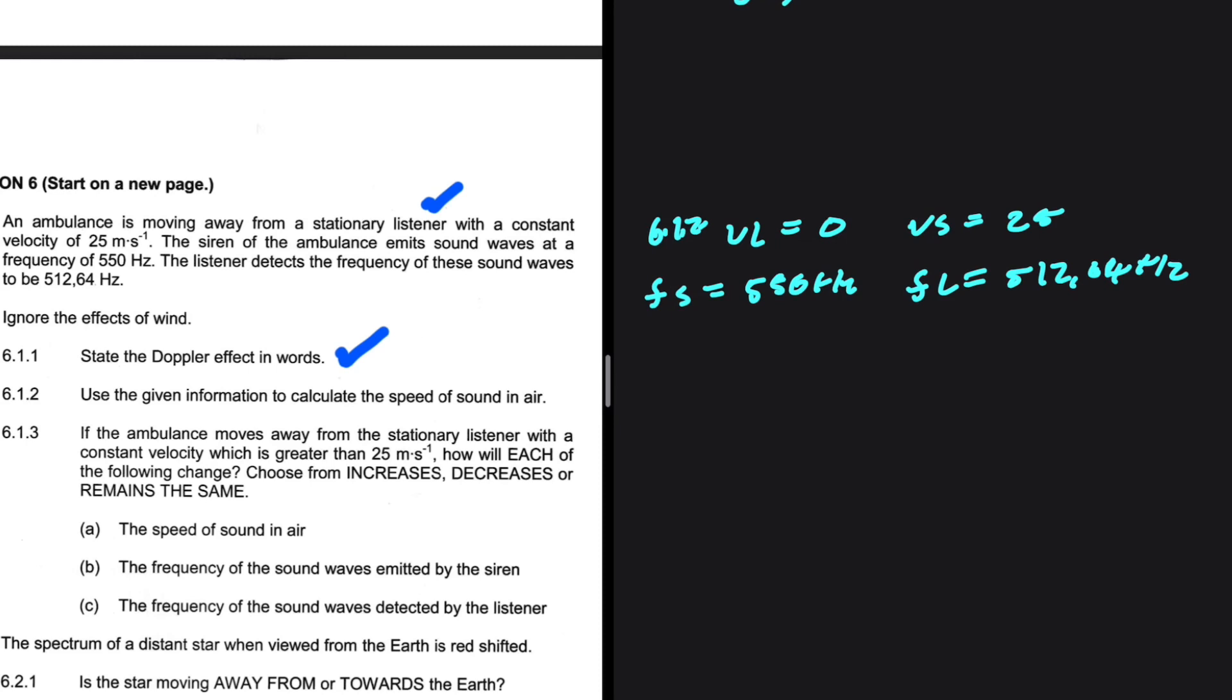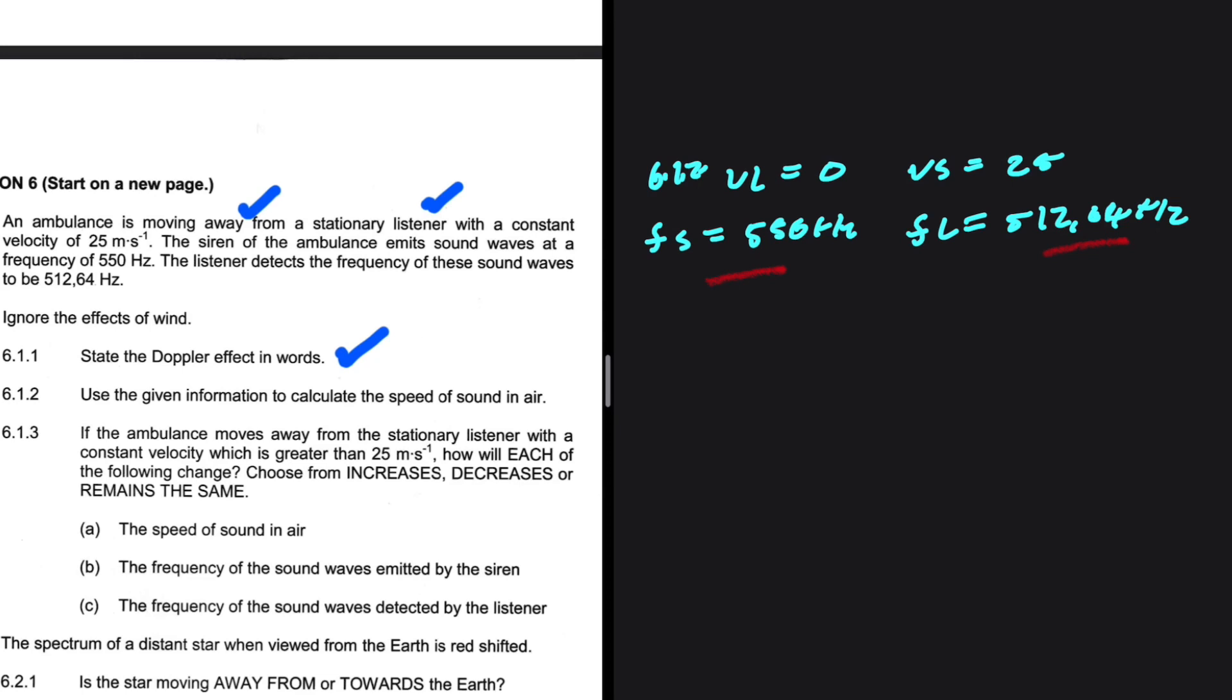We are told that the ambulance is moving away. But even if the question didn't say that the ambulance is moving away, we would be able to deduce it from the mere fact that the frequency of the listener is less than that of the source. So V, which is the speed of sound in air, what you are interested in, we don't have that. So that is our unknown variable.